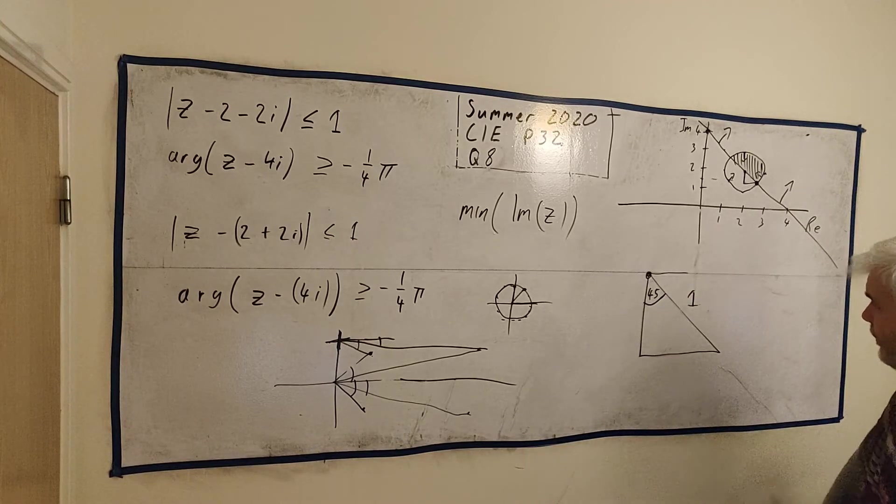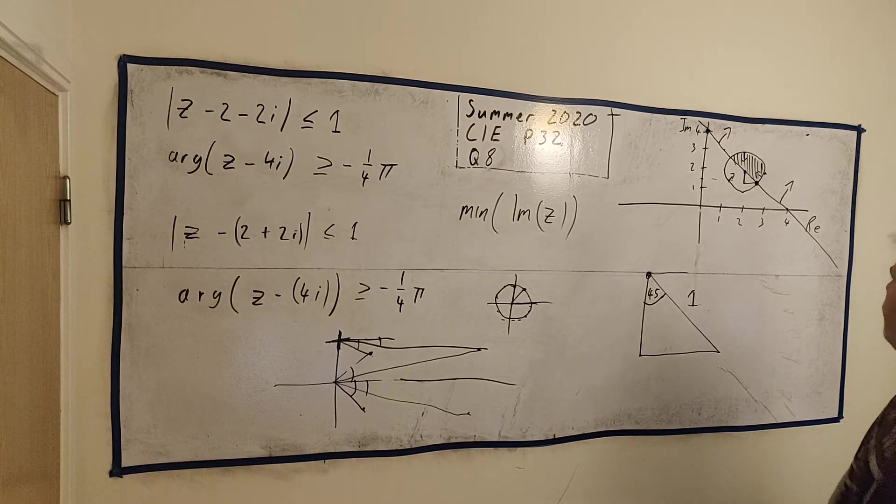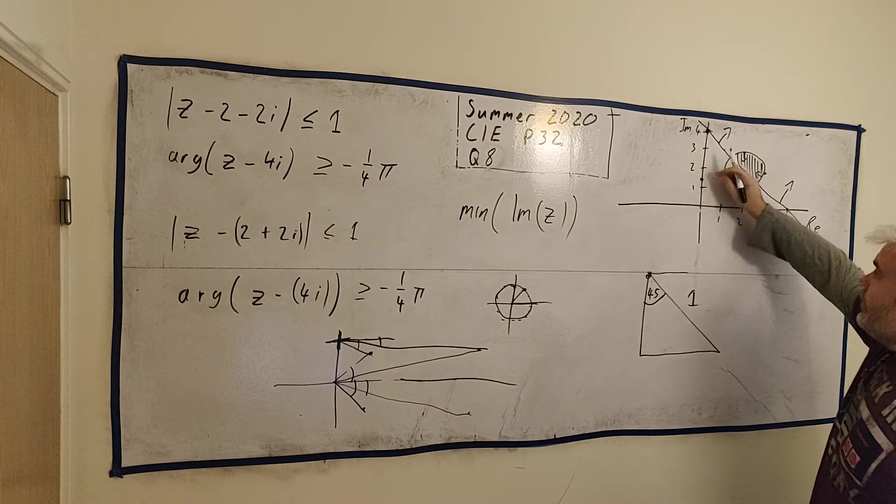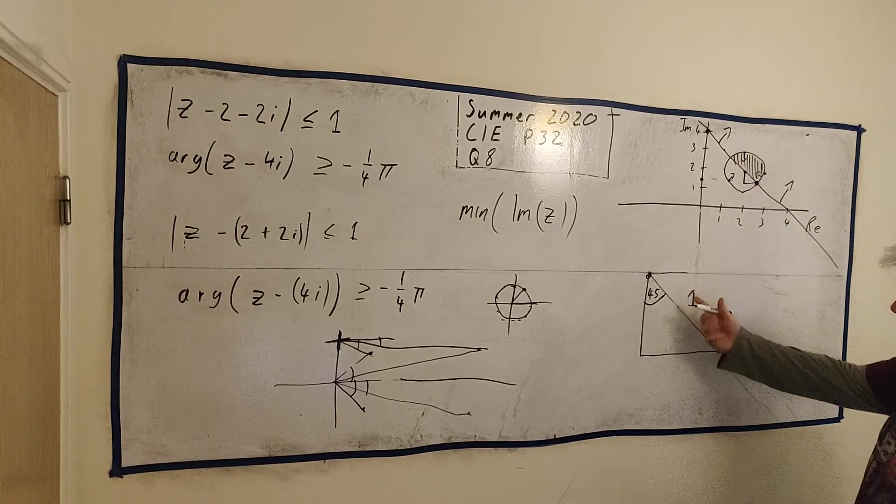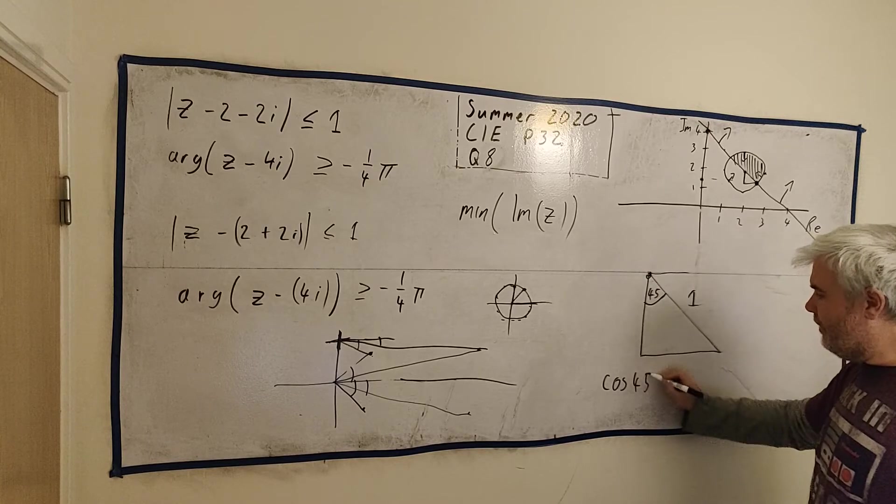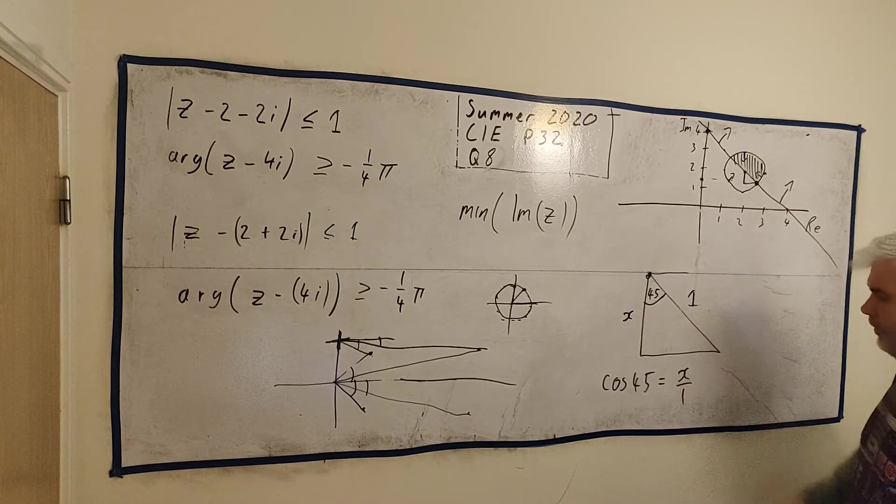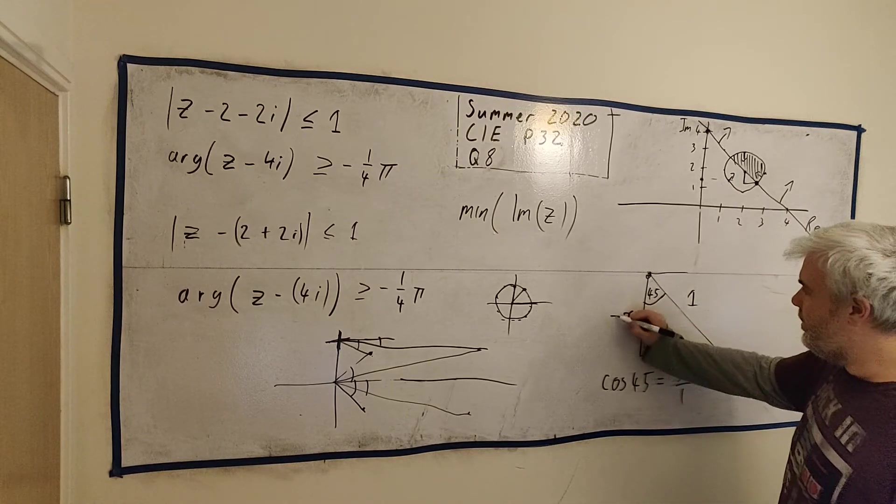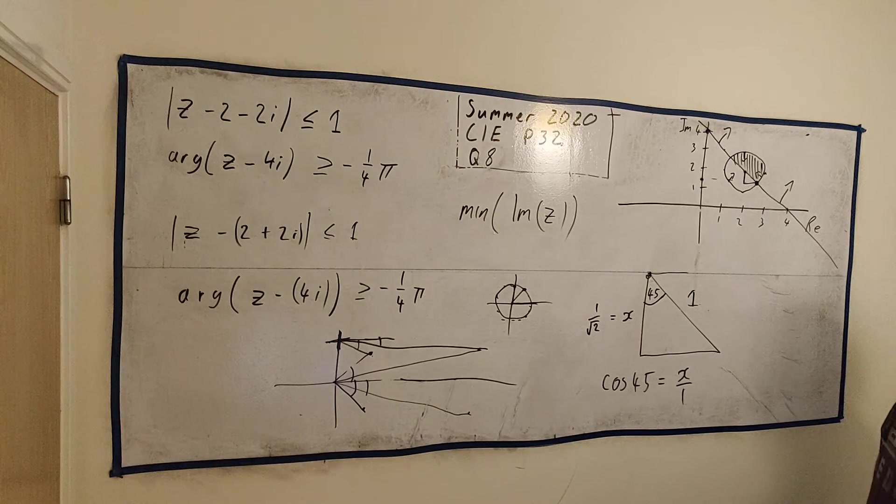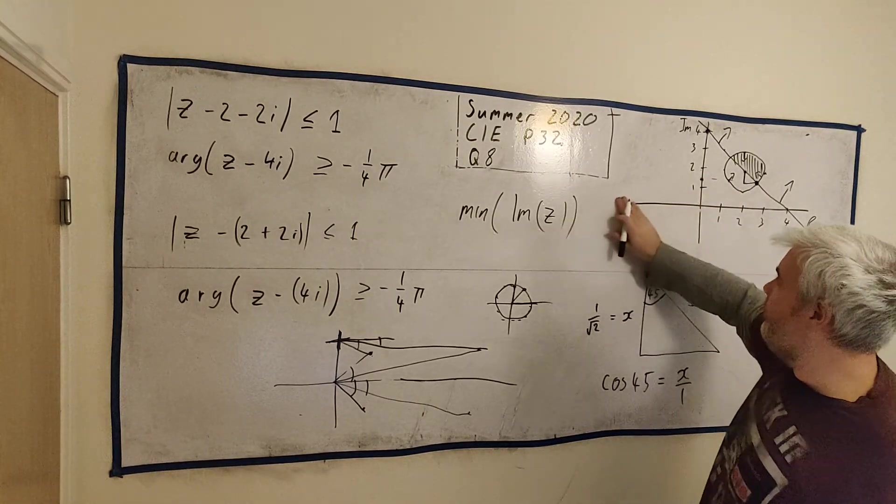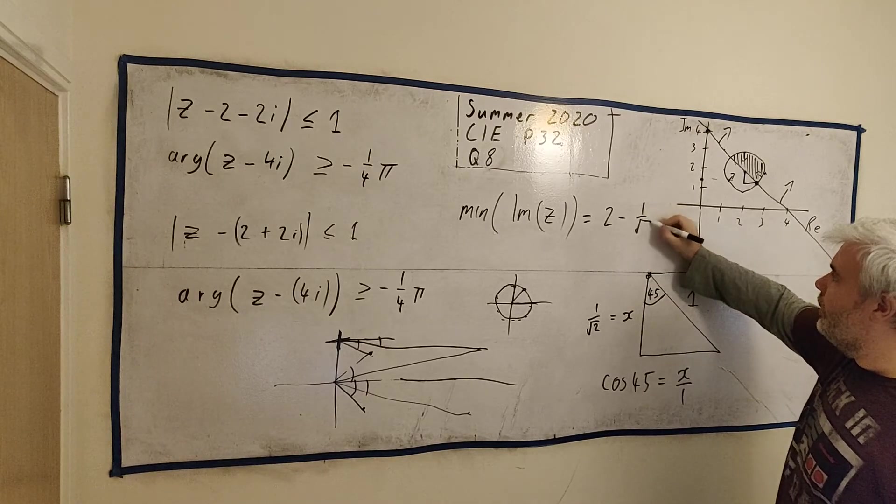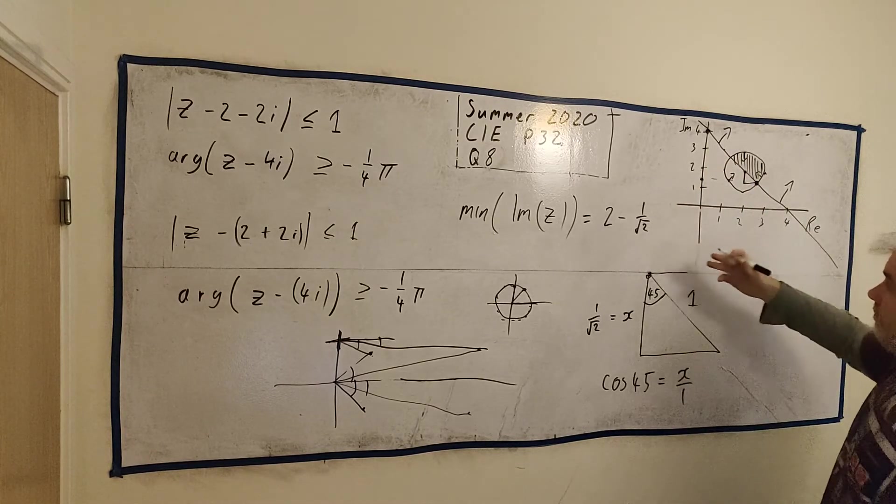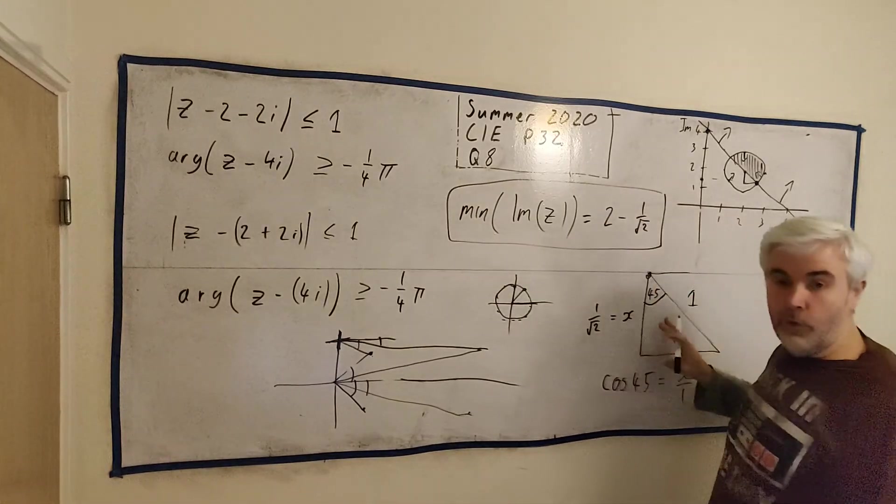So that's easy enough. That's just cosine. Cosine of 45 degrees equals x over 1. Put that into a calculator and we get x equals 1 over the square root of 2. The lowest value of z is equal to 2 minus 1 over square root of 2, because I'm here and I'm going down that much more. And that's it. That's your full answer. Very quick to do. At the end, just draw one simple triangle.